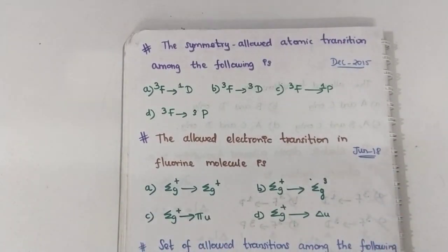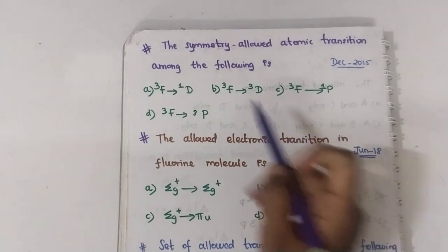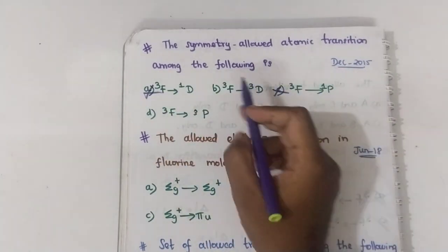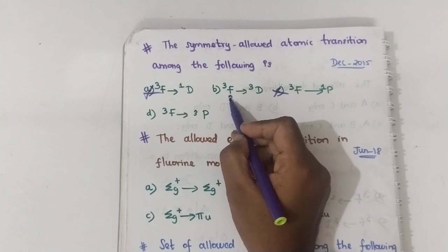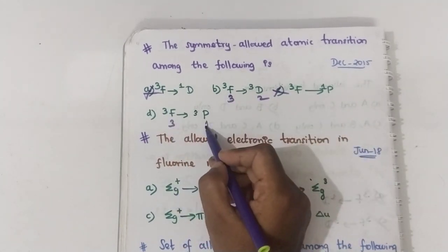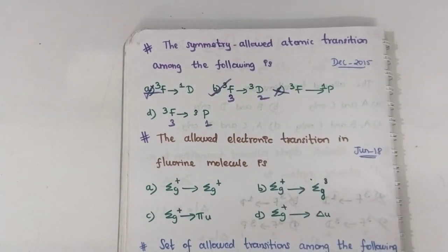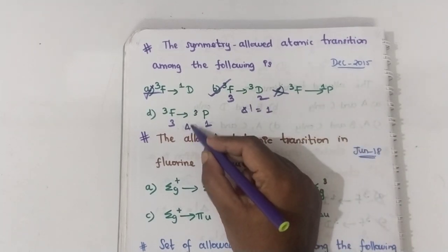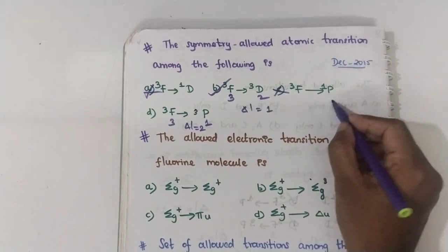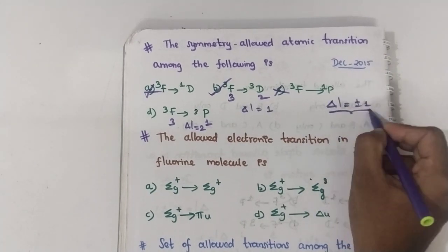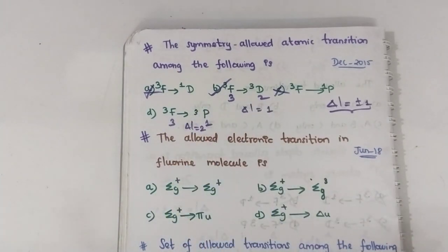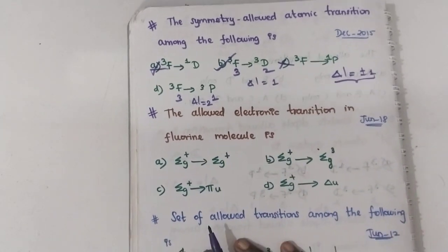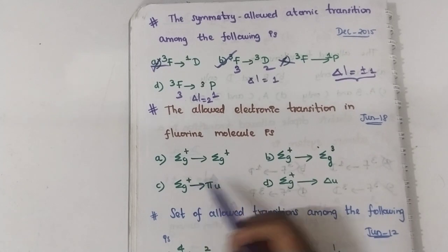For the symmetry-allowed atomic transition question: eliminate the two options with different spin multiplicities. For the remaining two, check Laporte: one has L=3 and L=2, giving ΔL=1 (allowed). The other has ΔL=2 (forbidden). So the transition with ΔL=1 is the symmetry-allowed transition.